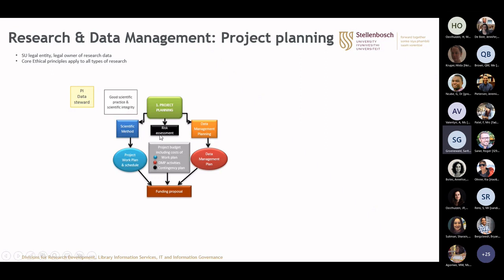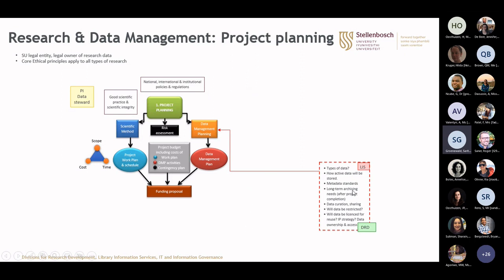When we start our project planning, we're going to plan the work plan using the scientific method or whatever the project plan will look like, and we're going to do good project management. We're going to consider good scientific practice and scientific integrity, and also look at national and international policies and regulations that may be relevant for the project. In the end, you will have a project work plan, a risk assessment plan, and a data management plan. All the costs that go along with these three activities will be included in the project budget, so it's very important to do the research data planning from the start so you can include the different costs in your funding proposal.